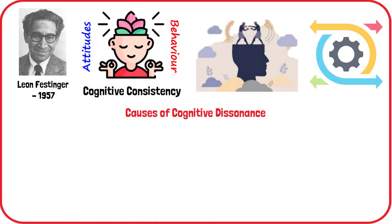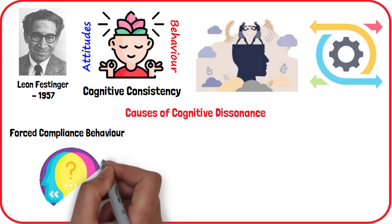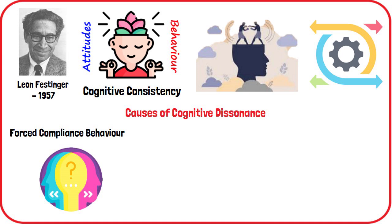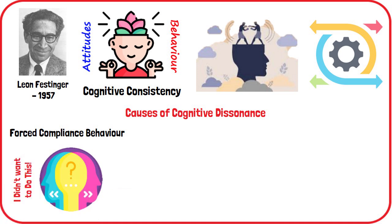What causes cognitive dissonance? Forced compliance behavior. Forced compliance occurs when someone is forced to do something publicly that they won't do in private. Dissonance is created between their cognition — 'I didn't want to do this' — and their behavior — 'I did it' — as they have done something that is inconsistent with their beliefs. The behavior can't be changed since it is already in the past, so dissonance will need to be reduced by re-evaluating their attitude or belief towards what they have done.